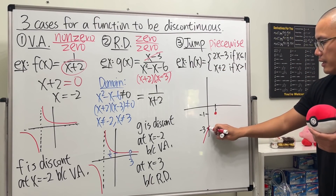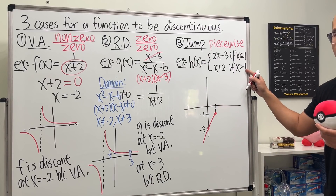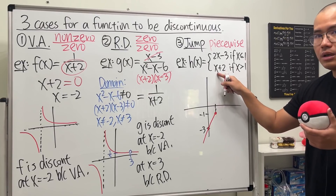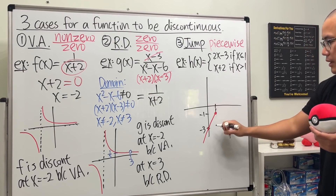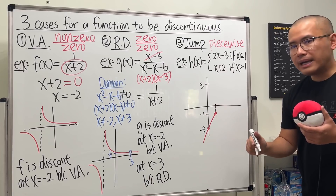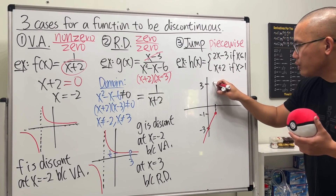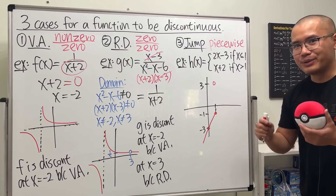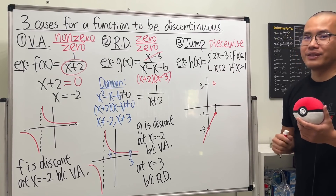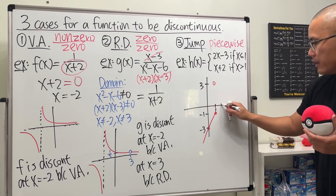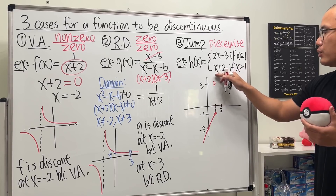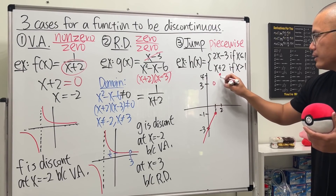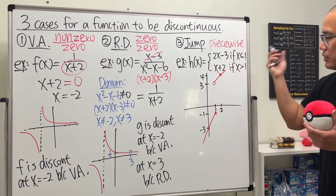Now for the second piece: even though x is greater than one, we still plug in one to find the starting point — one plus two is three, giving the point one, three. But we use an open circle because x is strictly greater than one. Then pick x equals two: two plus two is four, giving another point, and we connect them to complete the graph for the second piece.